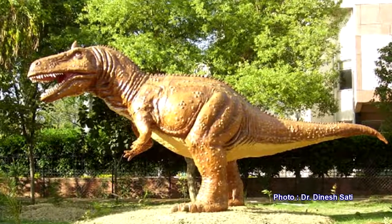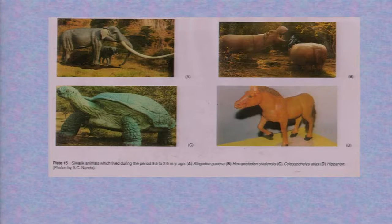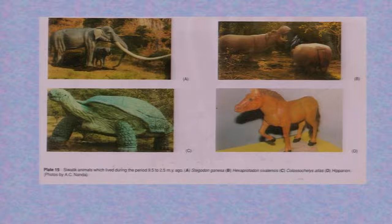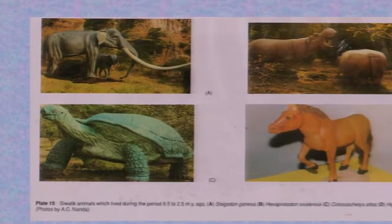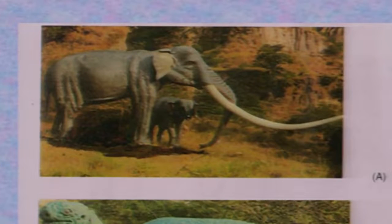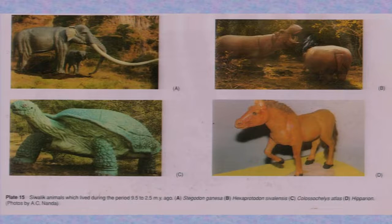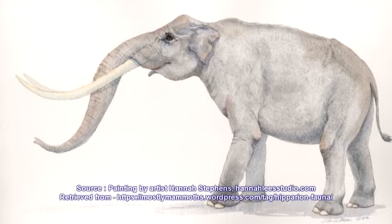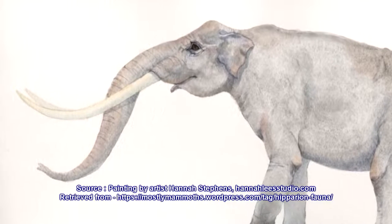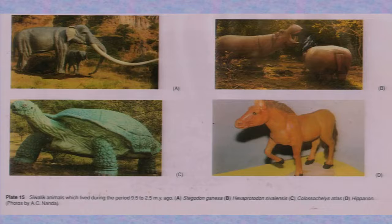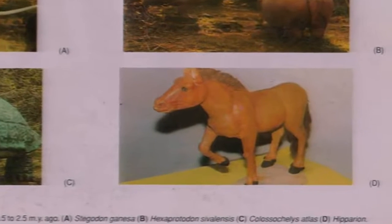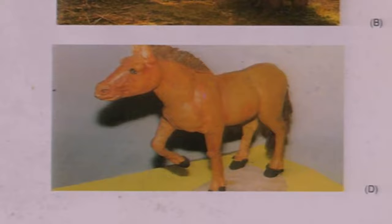When we talk about the Himalayas we naturally talk about the Shivalik, and when we talk about the Shivalik we talk about mammals — elephants, hippopotamus, tortoise, horse, giraffe, and camels. Those pictures are in front of you. If you see the tusk of the elephant, it is very large in comparison to present-day elephants. The shape of the horse resembles the present-day horse but has not yet fully evolved into it.